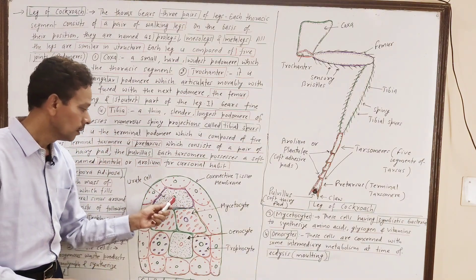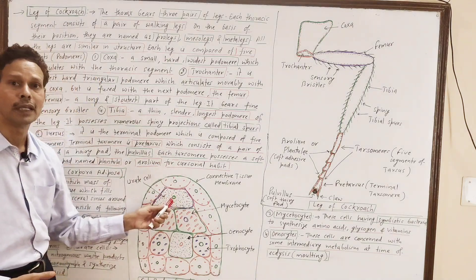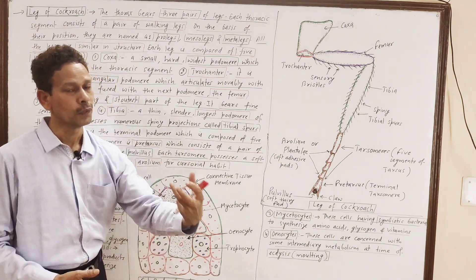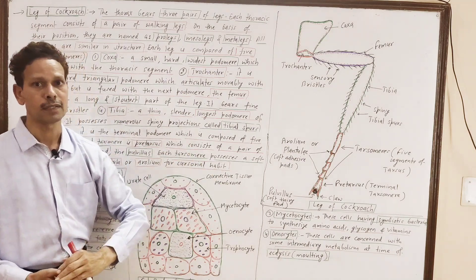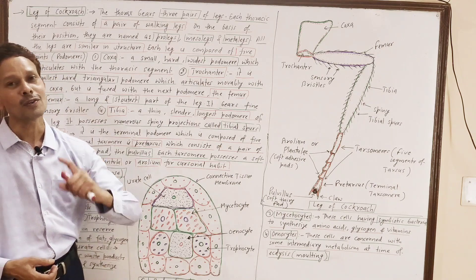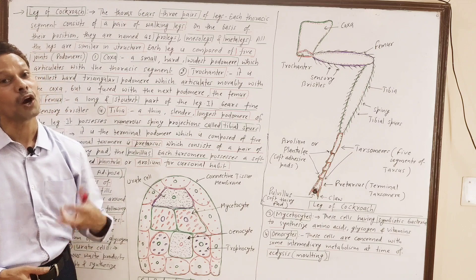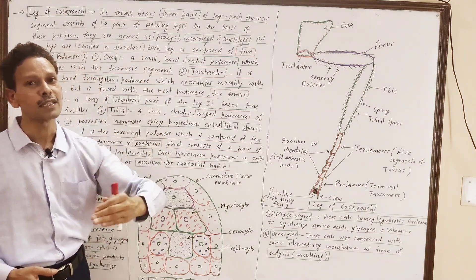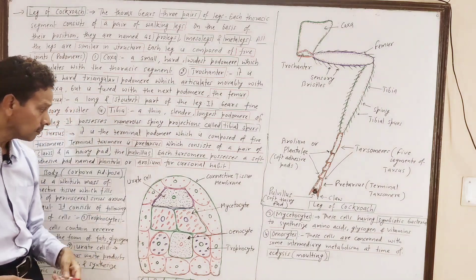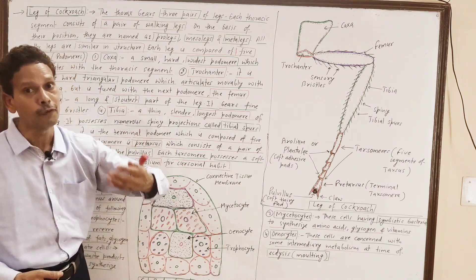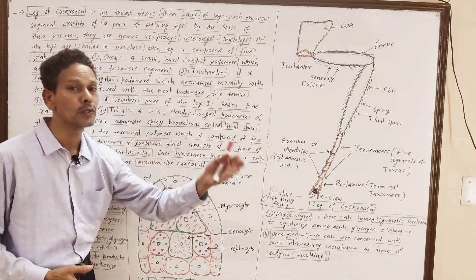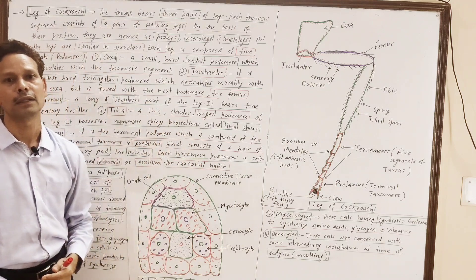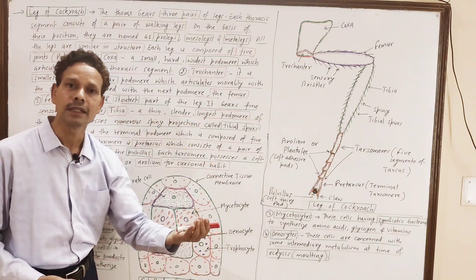Please note down the following important cells of the fat body. First are urate cells — as the name indicates, these are excretory cells which absorb nitrogenous waste products from the body fluid, that is hemolymph. These urate cells synthesize uric acid, because the animal is uricotelic, as it removes uric acid as its main excretory product.